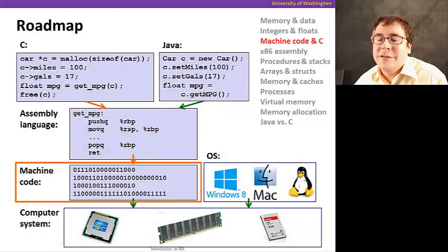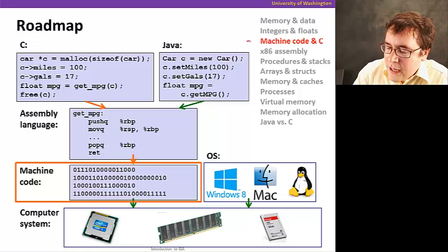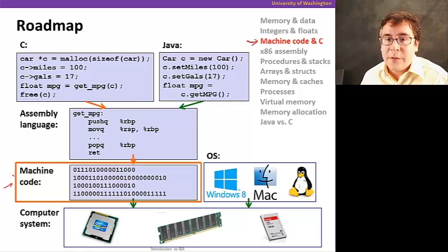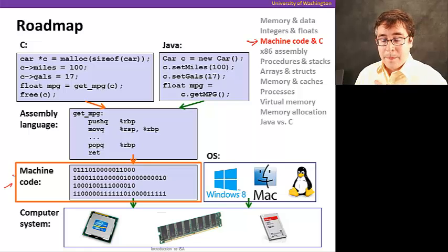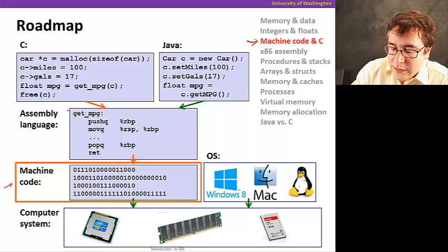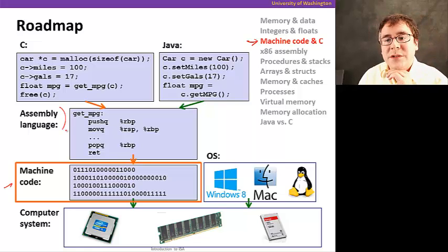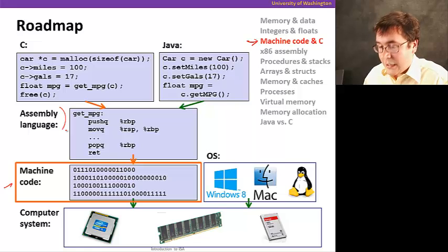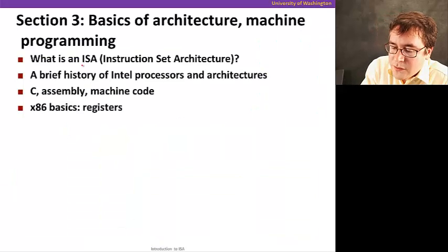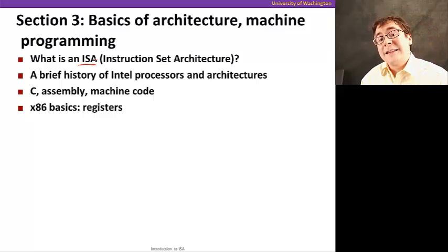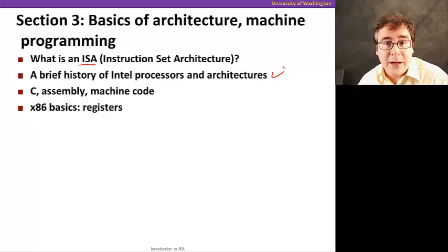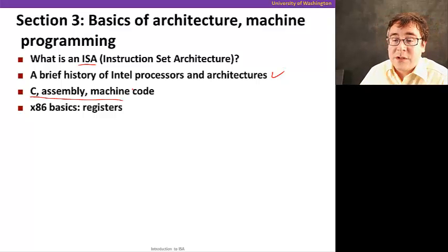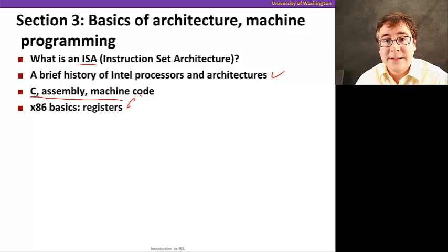We just heard from Gaetano how to encode integers and floats. Now in this new section, we're going to start looking at machine code — the zeros and ones that tell the computer what to do when executing a program. We're also going to look at an introduction to assembly language and basic machine organization. We'll cover what an instruction set architecture is, the history of Intel processors, how C and assembly code relate, and X86 basics.